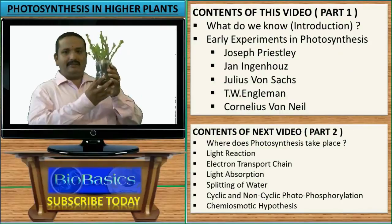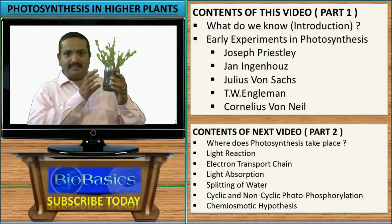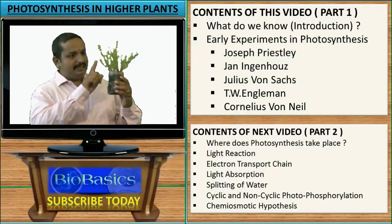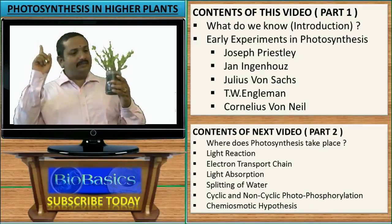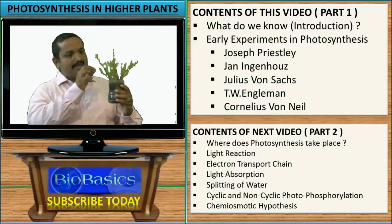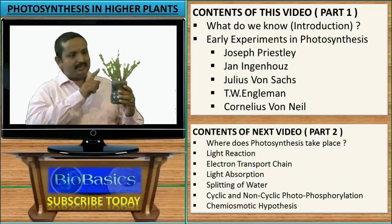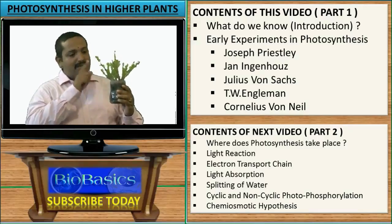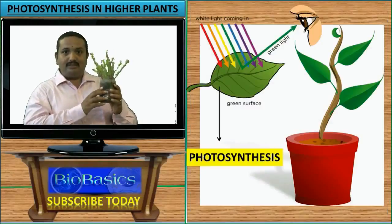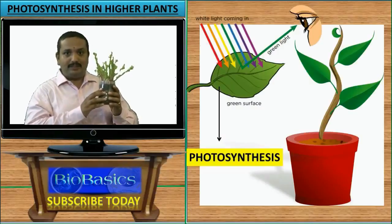Hello. I have a green plant with me, and as our scientific understanding has increased over the years, we know several things about this particular plant. This plant is green in color because it absorbs every single color from the visible spectrum of light and reflects or transmits only the green part of the spectrum, which means all the other colors are being utilized for photosynthesis. What is photosynthesis? That understanding is what we are going to find out in this class.